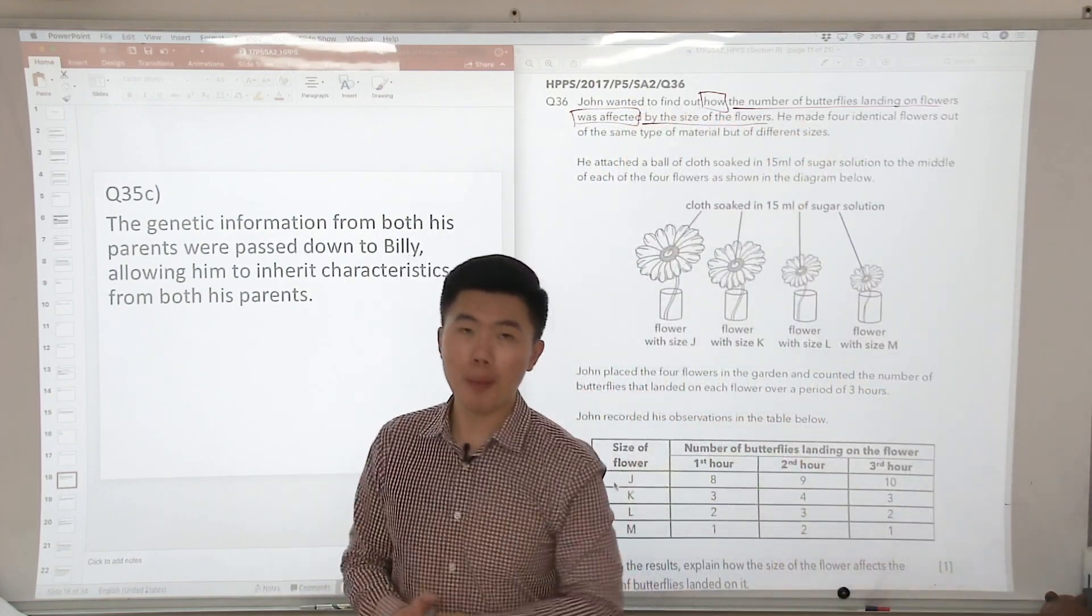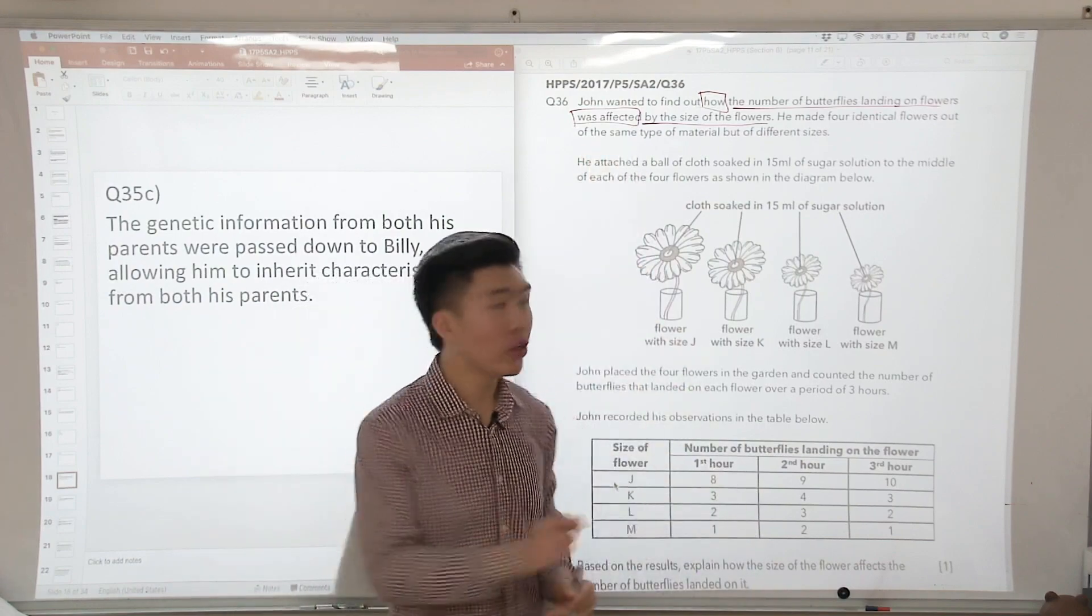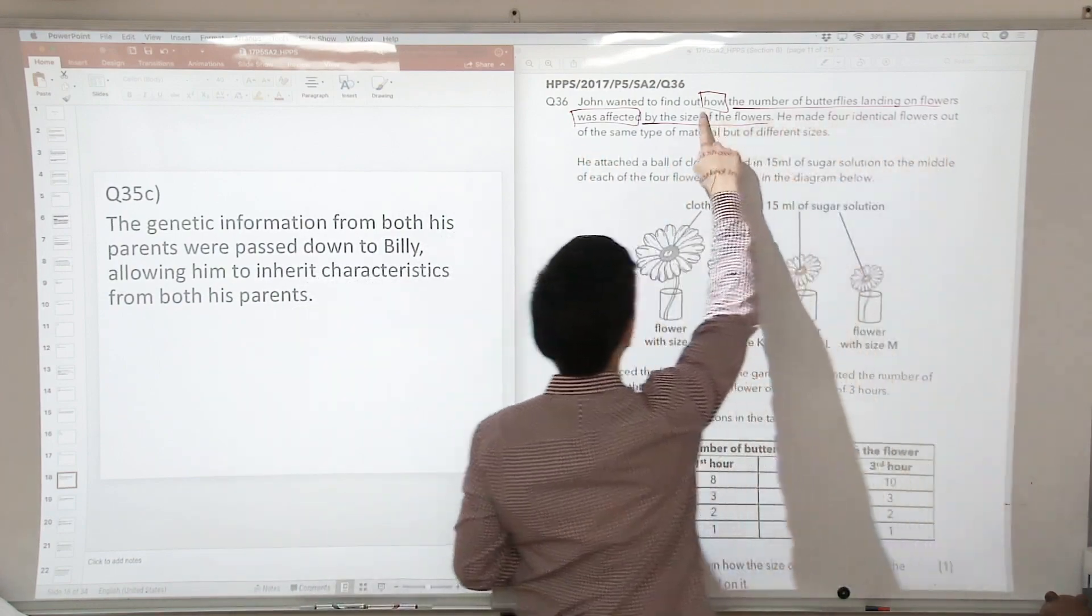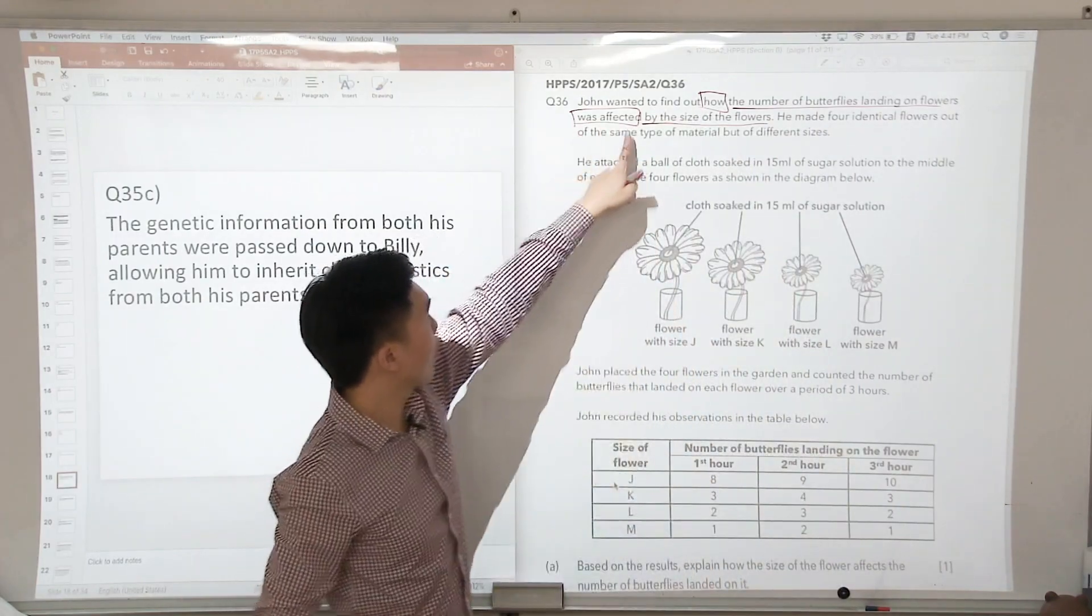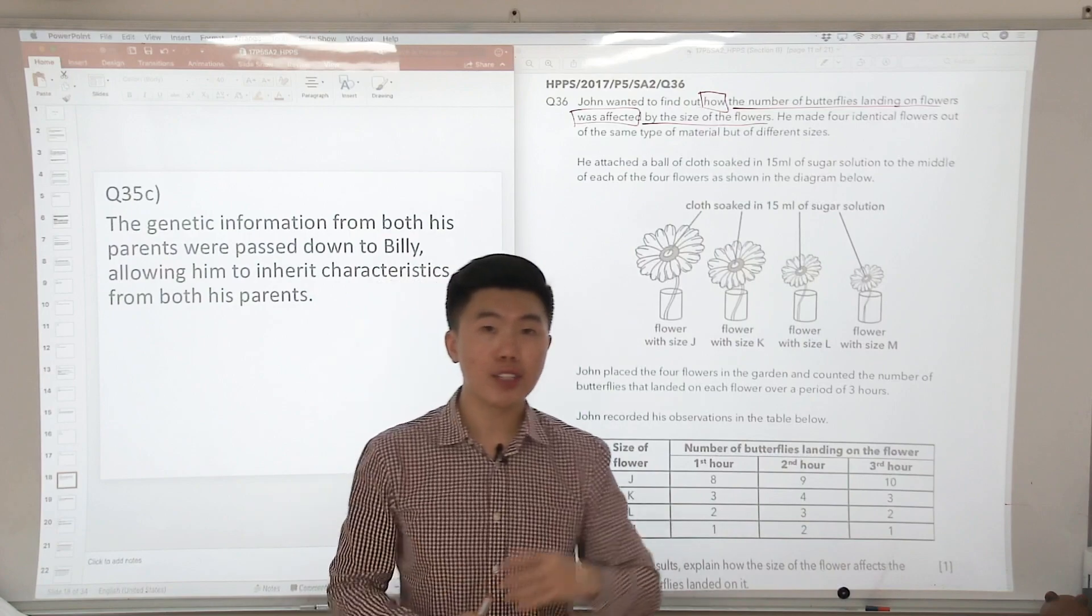Whenever we see something like that, we will put a box around the keyword how and the keyword affect, and then we're going to underline anything in between the word how and the word affect and then anything from the word affect to the full stop. This is important for us to identify the two variables.